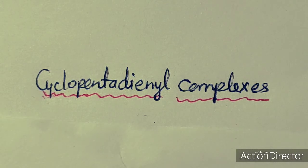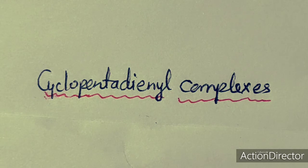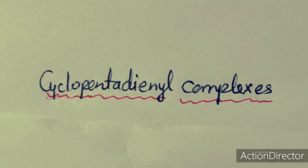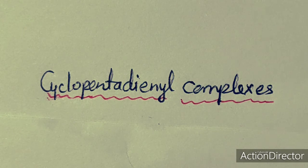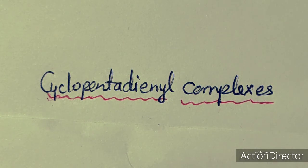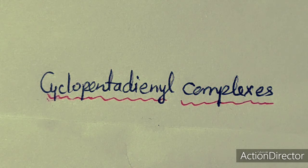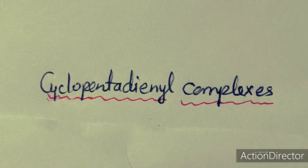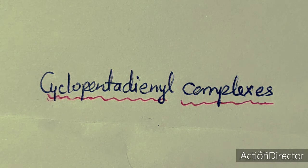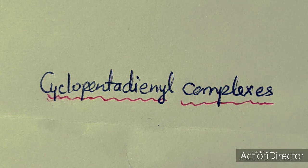Dear students, in this lecture we will discuss cyclopentadienyl complexes. These are complexes in which cyclopentadienyl acts as a ligand with transition metal complexes, lanthanides, or actinides. Generally, transition metal complexes form such compounds. In this lecture we will discuss the different aspects of cyclopentadienyl: the types of cyclopentadienyl complexes, their bonding, preparation methods, and properties.